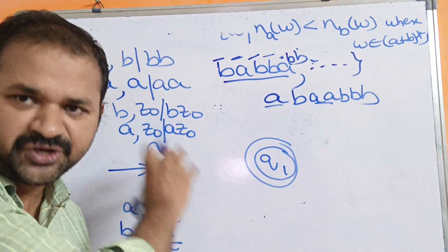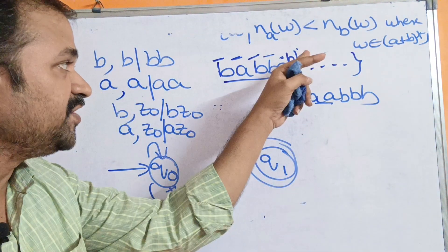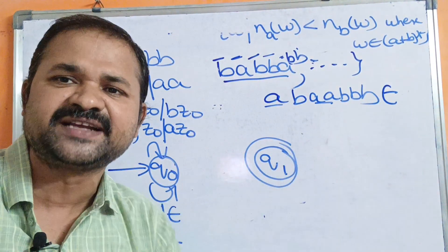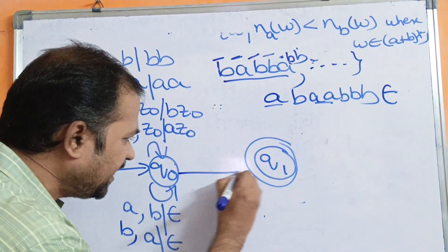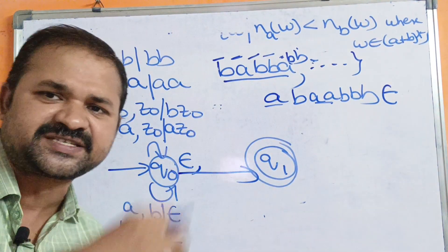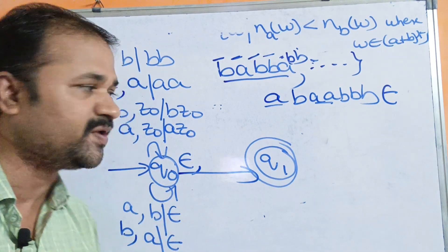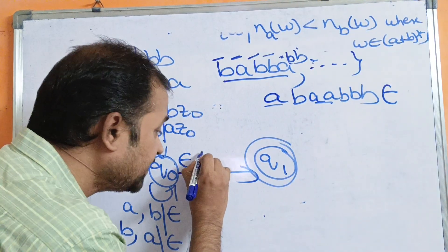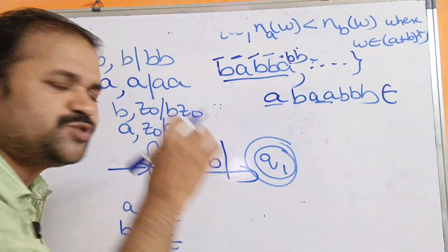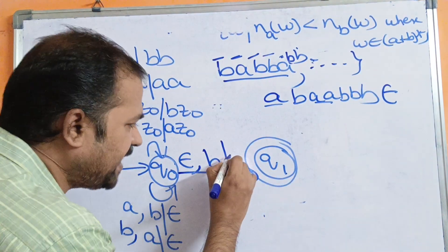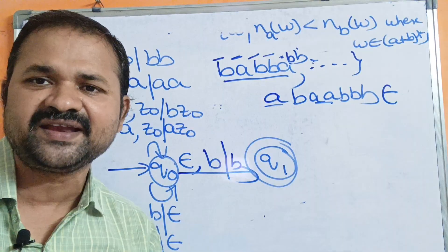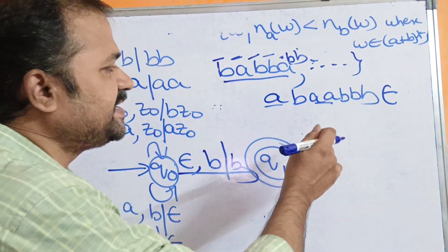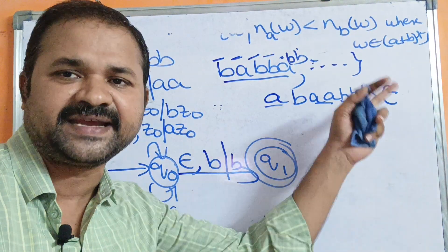We stay at Q0 for all those transitions. End of the input string is denoted by epsilon. So if we read epsilon on Q0, that means end of the string is reached and entire processing is over. B's being higher means the stack's topmost symbol is B — so there is no need to change the stack content. Keep B as it is and move to the final state Q1. Reaching Q1 means this PDA accepts the string correctly.